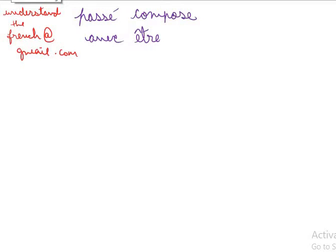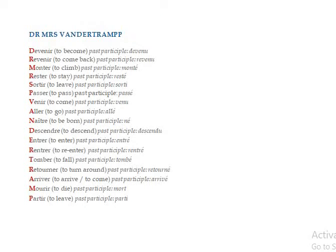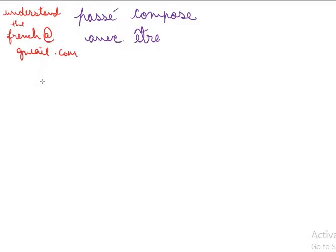Hello everyone, welcome to your French class. In today's video we'll take up the topic passé composé avec être. Please take a look at this list — this is the list of verbs conjugated in passé composé with être and not with avoir, which we covered in the earlier video. This passé composé with être form is only used with intransitive verbs. For example, in English: I went, I laughed, I fell — these are sentences which do not have a direct object.